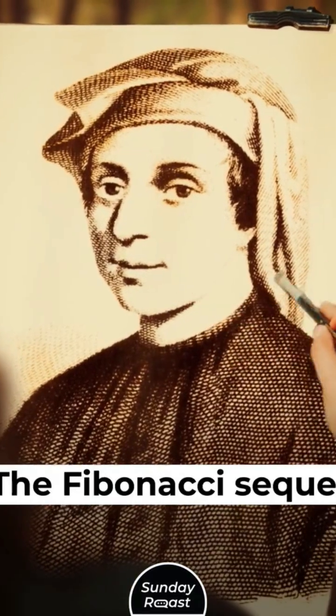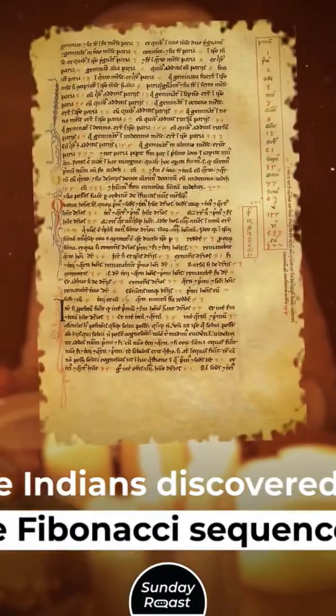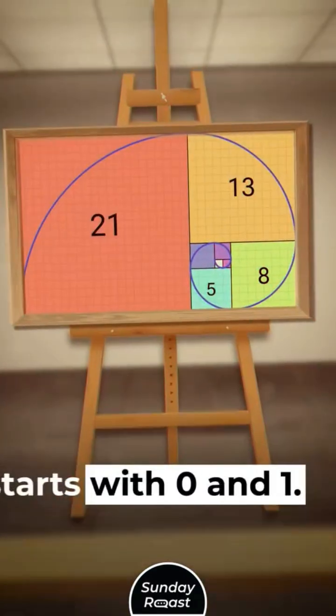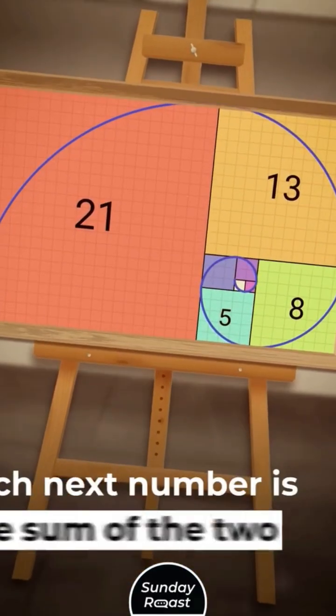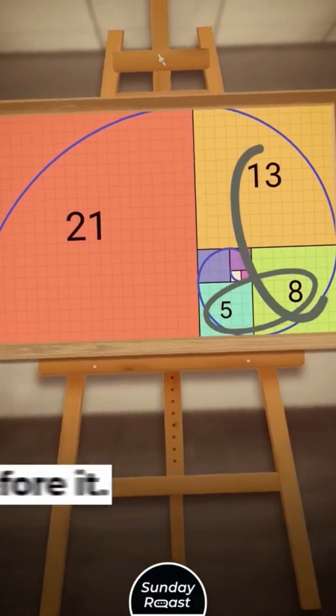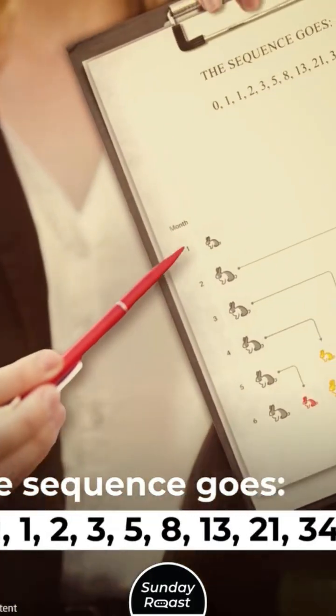The Fibonacci Sequence. The Indians discovered the Fibonacci Sequence. It starts with zero and one. Each next number is the sum of the two before it. This sequence goes: 0,